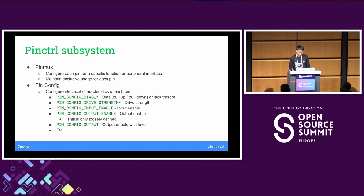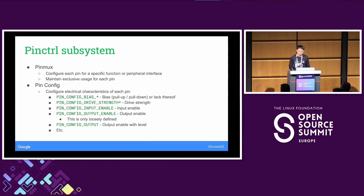The pin control subsystem has two parts. There's pinmux, which lets you select what function you want to use on a pin, and it maintains exclusive usage — you can't have two drivers requesting the same pin. The other part is pin config, which lets you set electrical characteristics such as biasing or drive strength for output signals. There's also input enable and output enable, which are supposed to enable buffers within the hardware, but those two things are loosely defined. There's also pin config output, which lets you set the electrical level on a pin, and that kind of conflicts with GPIO.